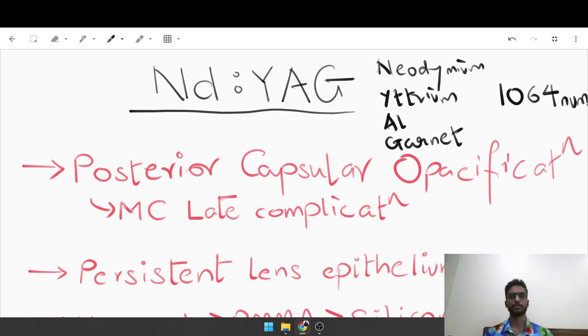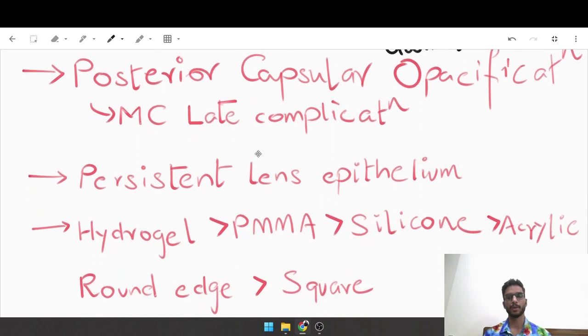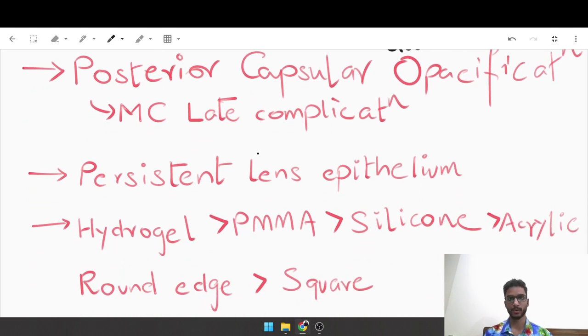Let's focus on the PCO part today because it is the most common late complication of cataract surgery, more commonly seen after ECCE or phacoemulsification and less commonly after SICS. Why does PCO happen? It happens because there is persistent lens epithelium - no matter how much a surgeon tries, some amount of epithelium is going to be left behind after cataract surgery.